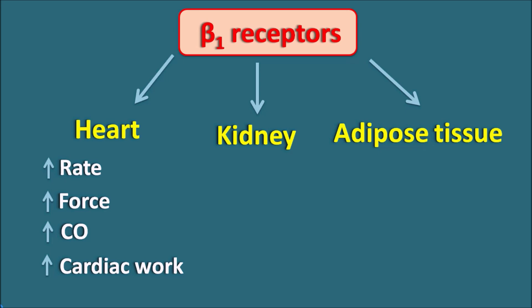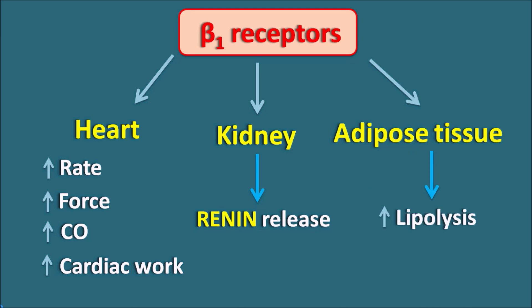Within the renal system, one of the mediators released is renin. Renin can activate the renin-angiotensin system, which increases sodium absorption and vasoconstriction. Beta-1 receptors act on the kidney, thereby increasing renin release, which results in a vasoconstrictive response. On the adipose tissue, beta-1 receptors can increase lipolysis, because when cyclic AMP levels increase, it results in activation of protein kinase A, which increases lipolysis.